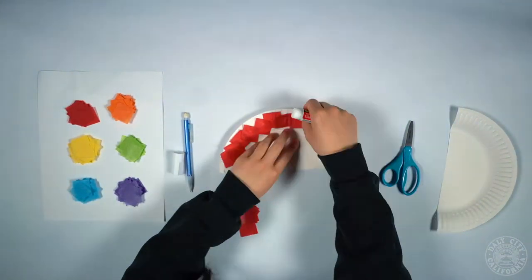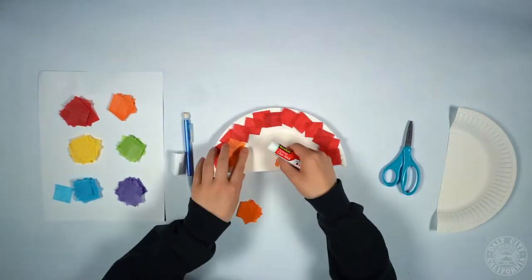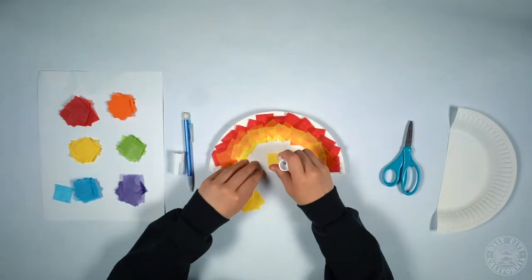The next thing you want to do is take your tissue paper squares and paste them like a rainbow on your paper plate.